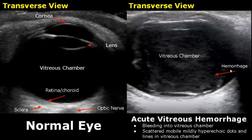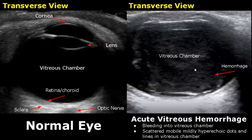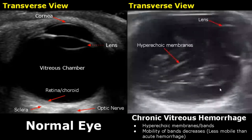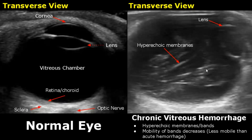Vitreous hemorrhage refers to bleeding into the vitreous chamber. In the acute phase we will see scattered, mobile, mildly hyperechoic dots and lines in the vitreous chamber, appearing because blood is denser than vitreous gel. In chronic vitreous hemorrhage we will start to see hyperechoic membranes or bands in the vitreous chamber. These bands will move around much less — they have less mobility compared to acute vitreous hemorrhage.